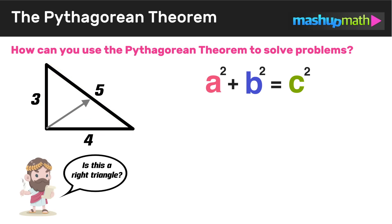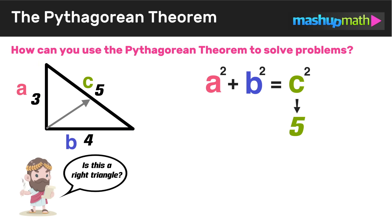For this example, let's label a, b, and c. We know c is the hypotenuse — the longest side — so in this example c equals 5, since that side is directly opposite the right angle. Next we look at the legs to find a and b — the two shorter sides. In this example, a equals 3 and b equals 4. You could also do b equals 3 and a equals 4; it doesn't matter as long as you correctly identify c.